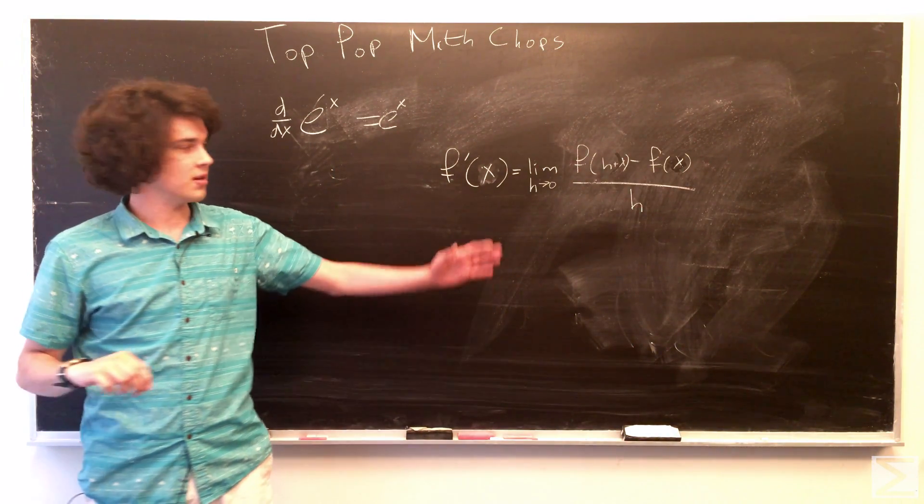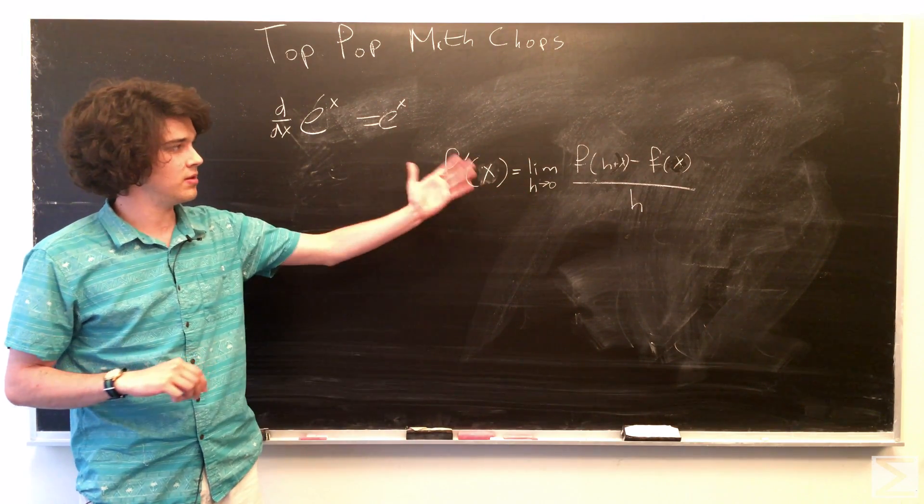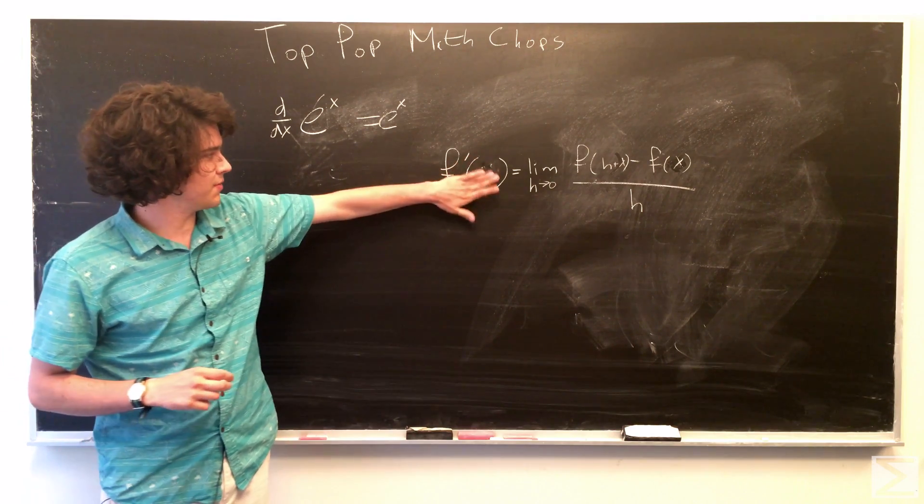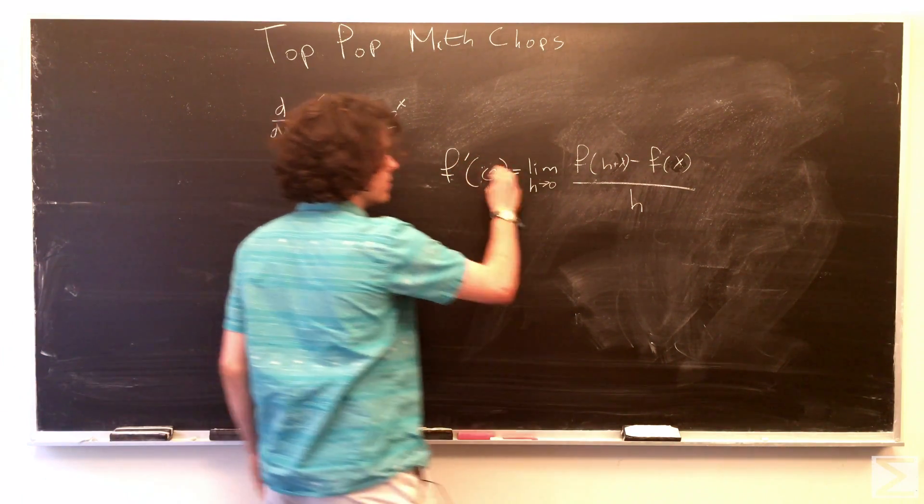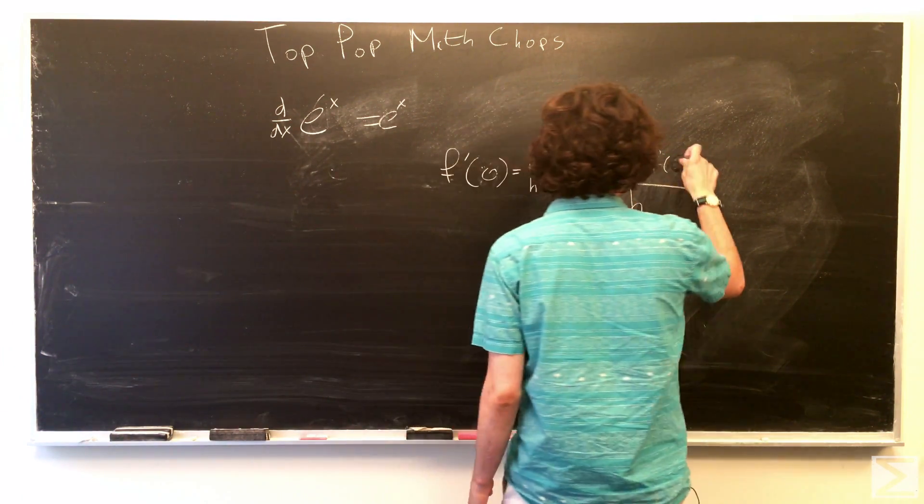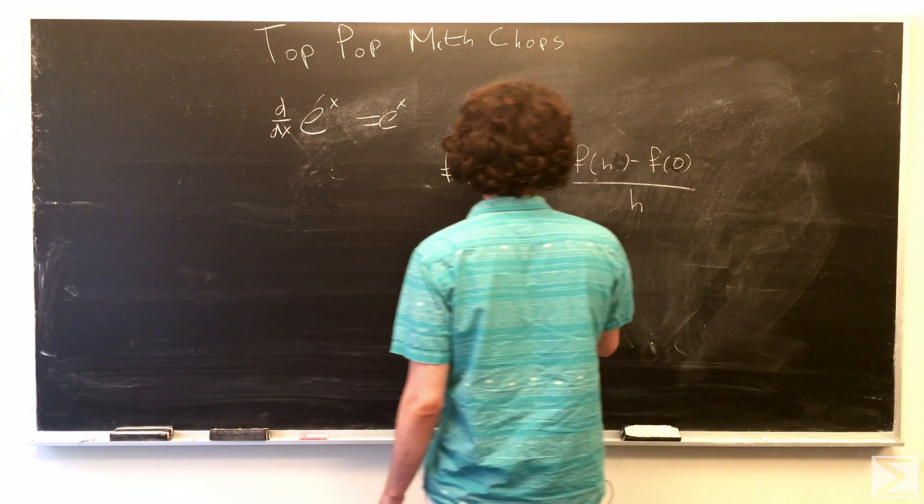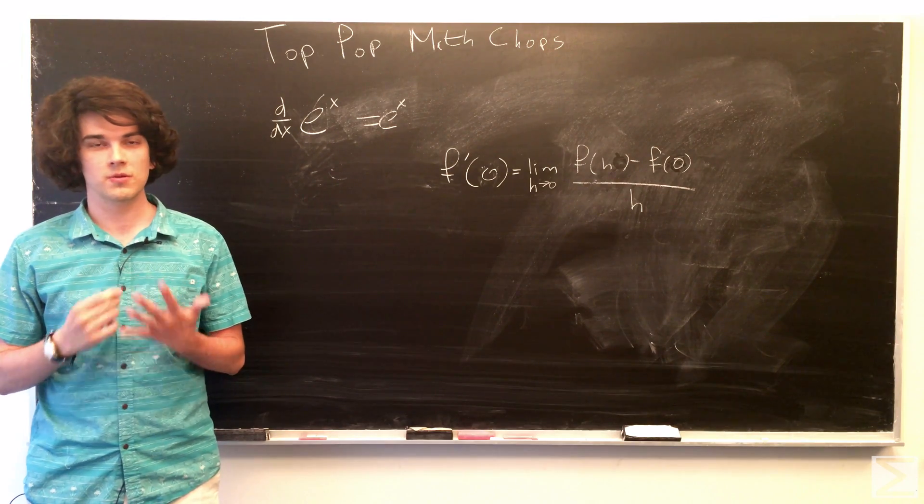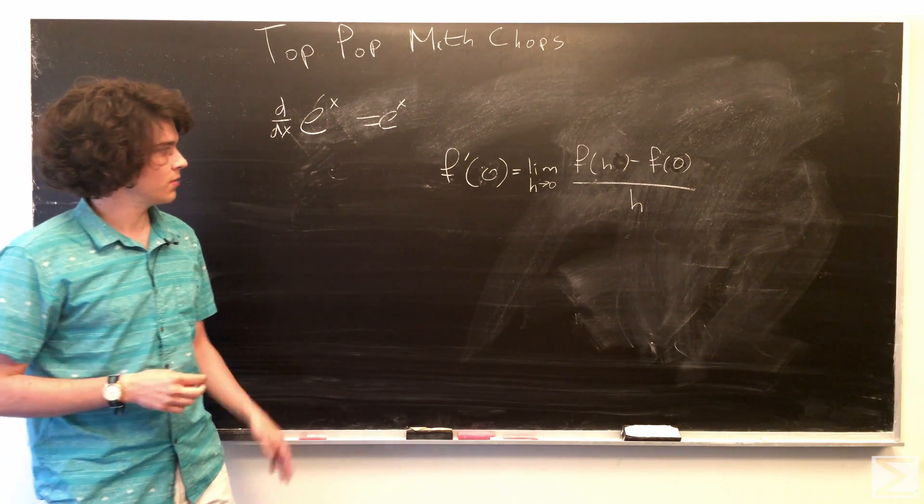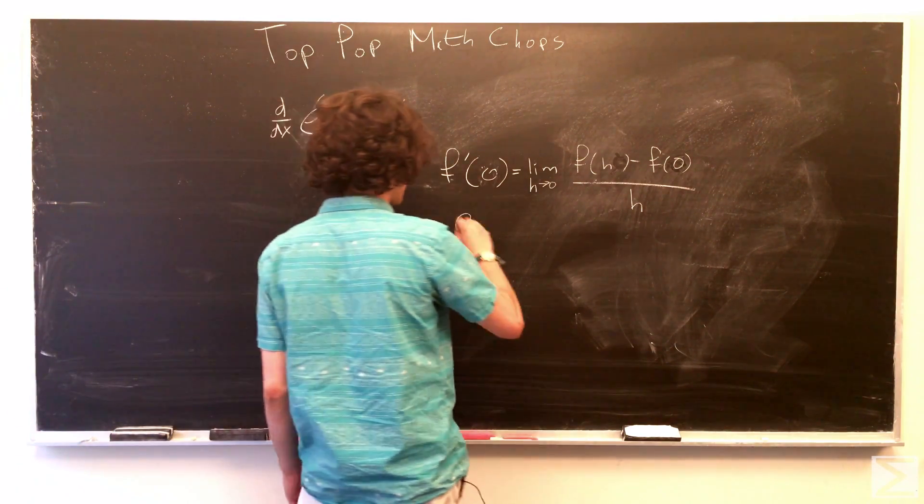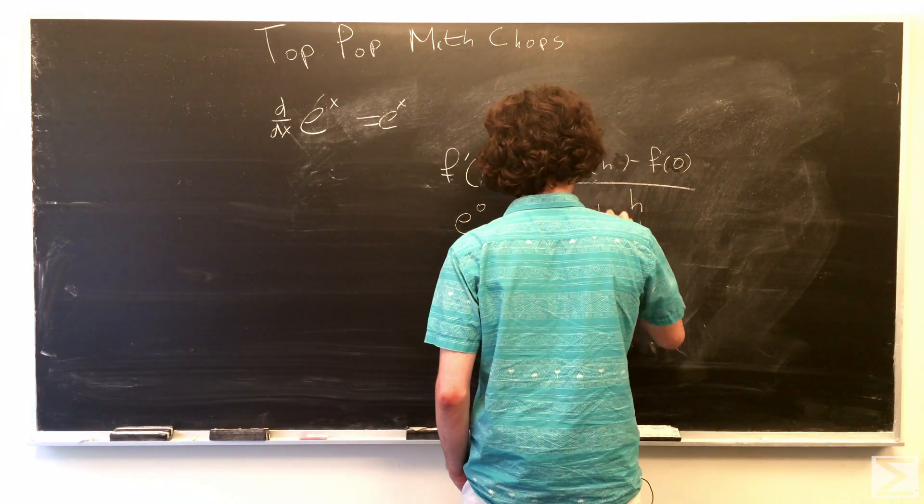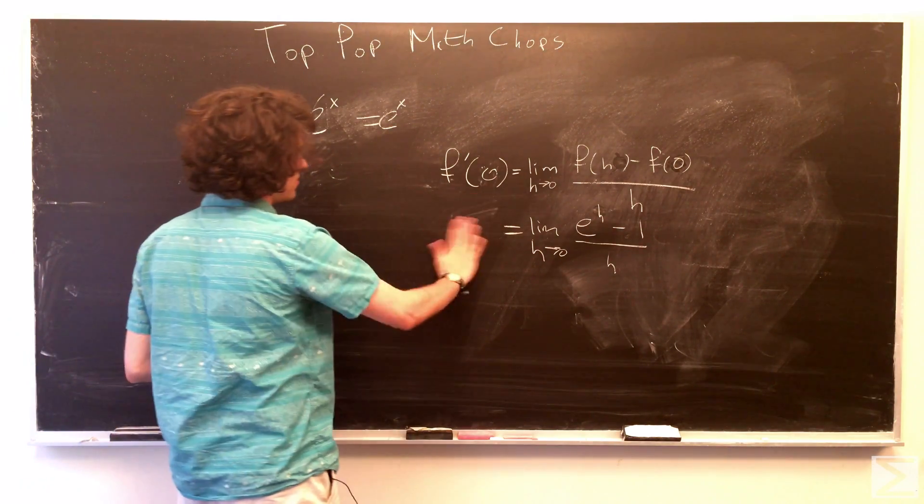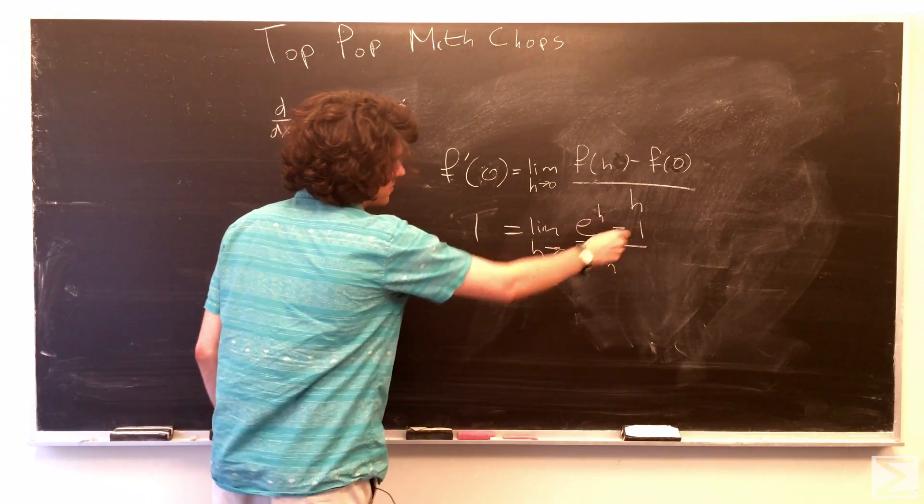So, we're just taking a limit as h approaches 0, of basically the rise over run over an infinitesimal portion. And, of course, since e to the x is equal to the derivative of e to the x, we have e to the 0, because we're taking x at 0, which is 1. And, I already substituted the 1 in there.